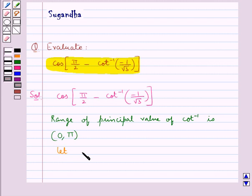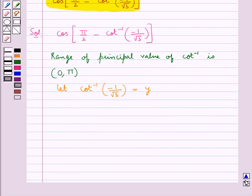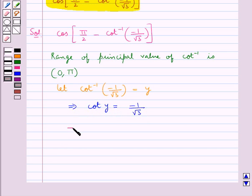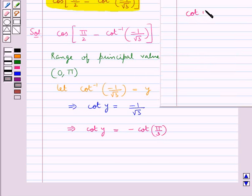We let cot inverse of minus 1 upon root 3 be equal to y. So from here we get that cot y equals minus 1 upon root 3, which can also be written as minus cot(π/3), since the value of cot(π/3) is 1 upon root 3, so minus cot(π/3) equals minus 1 upon root 3.